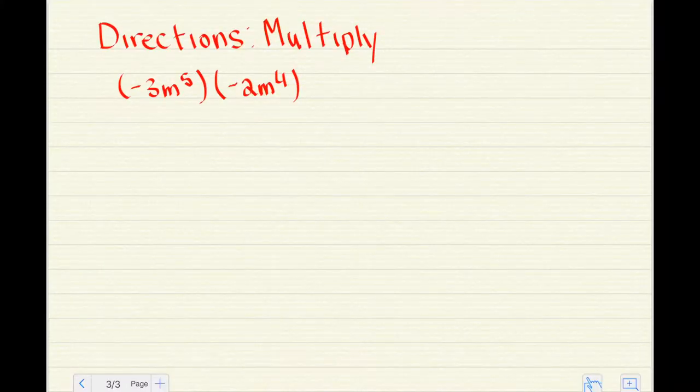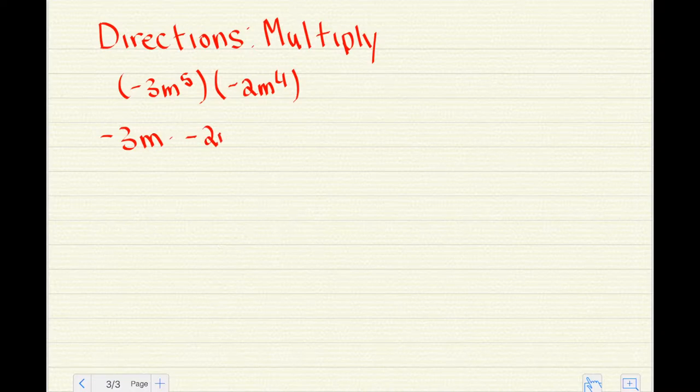The last problem that we have is negative 3m to the 5th power times negative 2m to the 4th power. So again we need to multiply the coefficients. Negative 3m times negative 2m equals 6m.